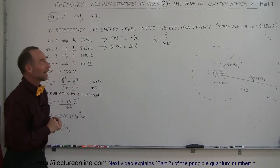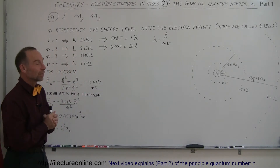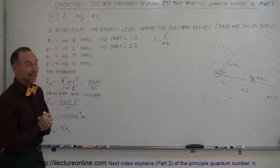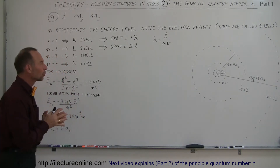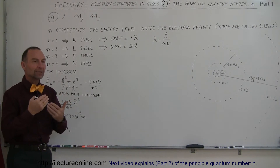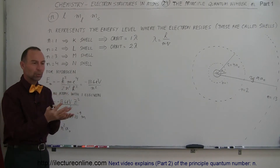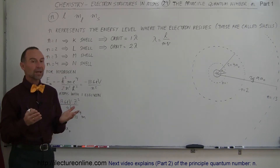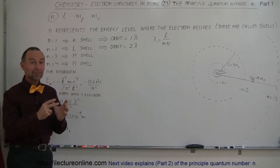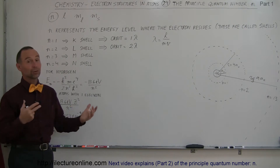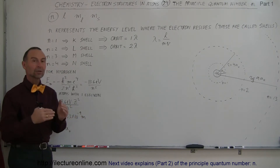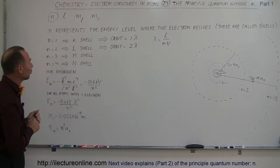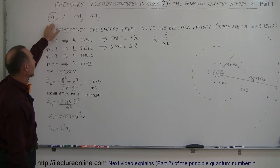Welcome to our lecture. In this video we're going to take a closer look at the four quantum numbers, starting with quantum number n. The four quantum numbers are the four numbers that we use to define the structure of the electron orbits around the nucleus of an atom. We're going to focus on the hydrogen atom because it's the simplest and easiest to work with.